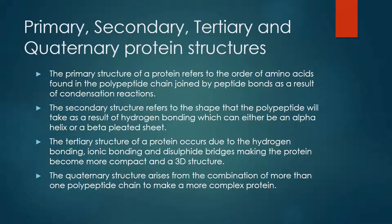The tertiary structure of a protein occurs due to hydrogen bonding, ionic bonding, and disulfide bridges, making the protein become more compact and a 3D structure, therefore making it more specific to its substrate or whatever its function is. The quaternary structure only arises when more than one polypeptide chain is combined together to form a more complex protein.